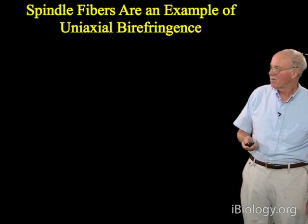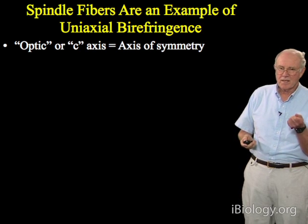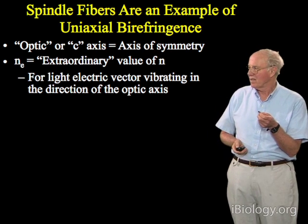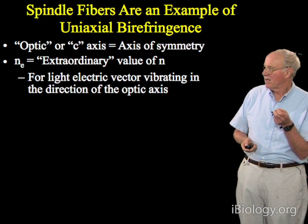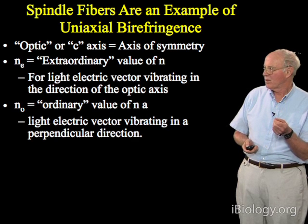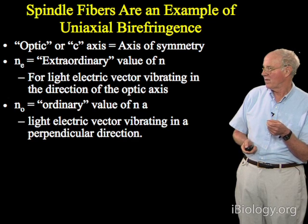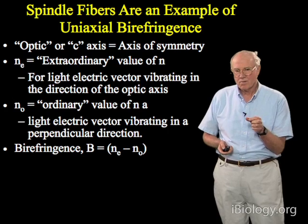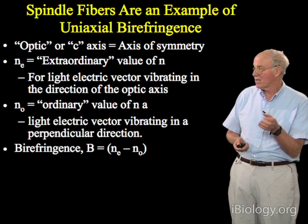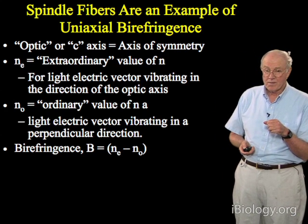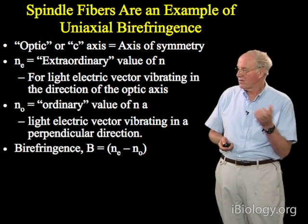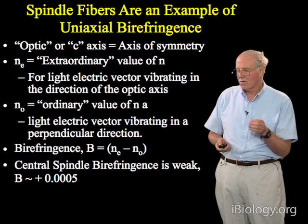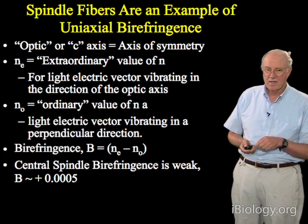Spindle fibers are an example of uniaxial birefringence — there is an optic or c-axis of symmetry in the direction of the fibers. n sub e is the extraordinary refractive index for the electric vector vibrating in the direction of the optic axis, and n sub o is the ordinary refractive index for the vector vibrating perpendicular to it. Birefringence B equals n sub e minus n sub o — positive if that difference is positive, negative if it is negative. The central spindle birefringence is relatively weak at approximately 0.0005.